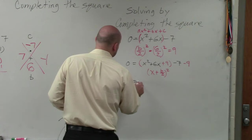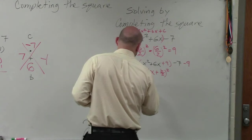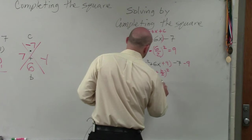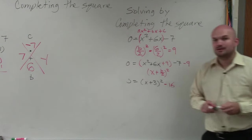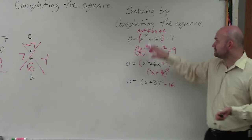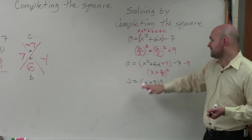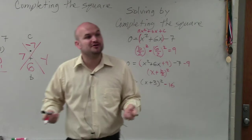x plus 3 times x plus 3, right? What was b divided by 2? 3. So our equation, so it's x plus 3 times x plus 3, which is the same thing as x plus 3 squared. And this becomes a negative 16. So this is basically what we learned before, how to take a quadratic in standard form and put it into vertex form. Now what I'm going to show you is, well, how do you solve that?